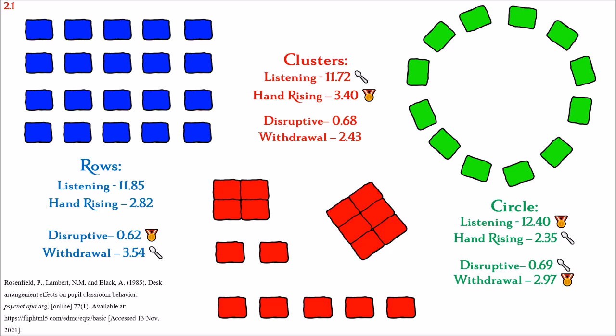And finally, we have withdrawal. Rows scored 3.54, clusters scored 2.43, and circle scored 2.97. So the best layout to make children feel less withdrawn is circle, while the worst is rows. As you can see, desk layouts may not be so simple as saying one type is best. Instead, adapt around your current students to best suit them and your own teaching style.